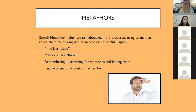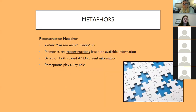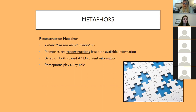As I get to the next slide, you'll see that the search metaphor is not the most accurate way to conceptualize memory, but it is a way we use a lot just to describe what we're remembering. A more accurate way to talk about memory is called the reconstruction metaphor. This says that memories are reconstructions based on available information. When you're remembering something, you're reconstructing that event based on the information stored in your memory and the current information around you that's providing cues. So your perceptions in the present actually play a key role in your memory of the past.